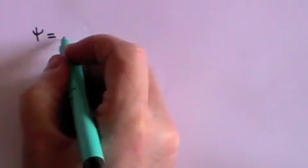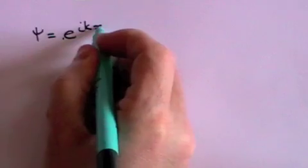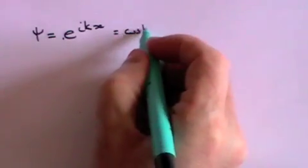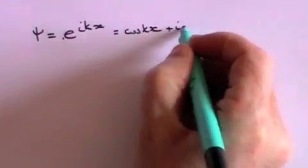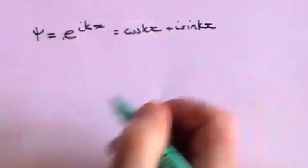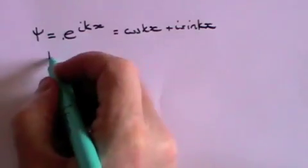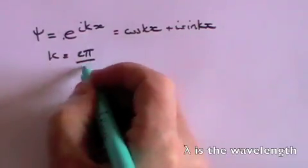In my video on the wave function, I showed why it was useful to choose a wave equation to describe the electron of the following form: psi equals e to the i kx, which also equals cosine kx plus i sine kx. k equals 2π over λ, where λ is the wavelength of the wave.